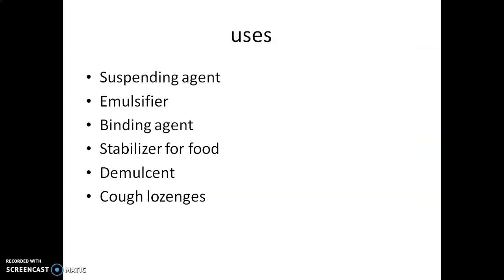This gum is mainly used as an emulsifying agent, suspending agent, and natural emulsifier. It is also used as a binding agent, stabilizer for food, and demulcent. As a demulcent, it protects from inflammation — it protects the throat from inflammation and relieves irritation of the mucous membrane in the mouth by forming a protective thin film. That is why it is used in cough lozenges and cough drops.